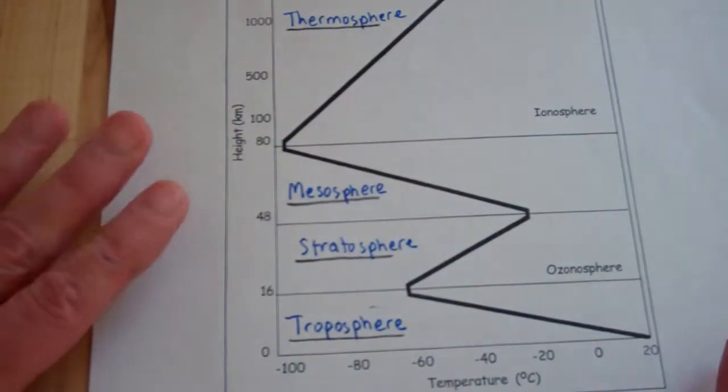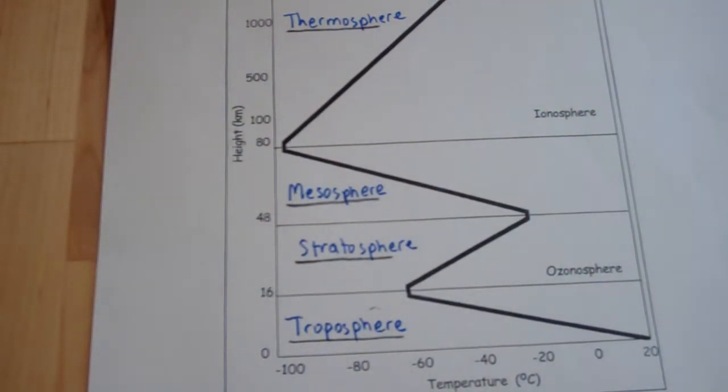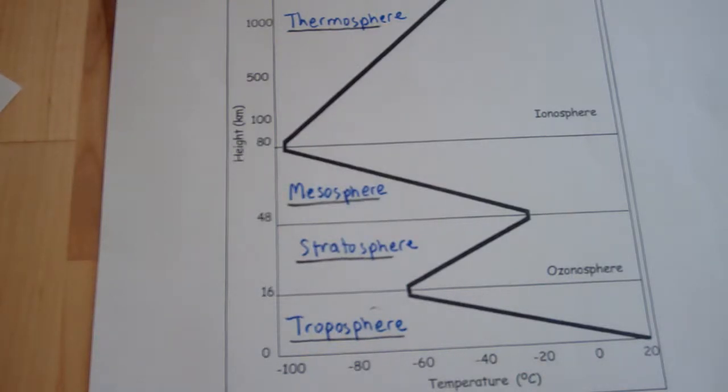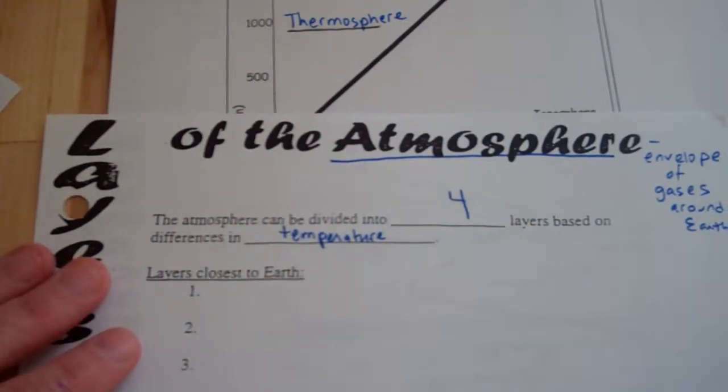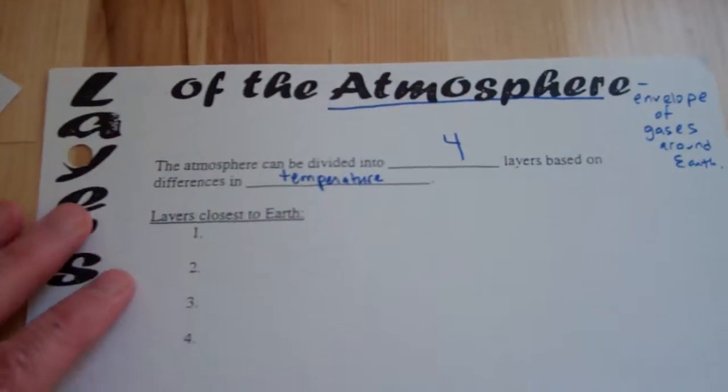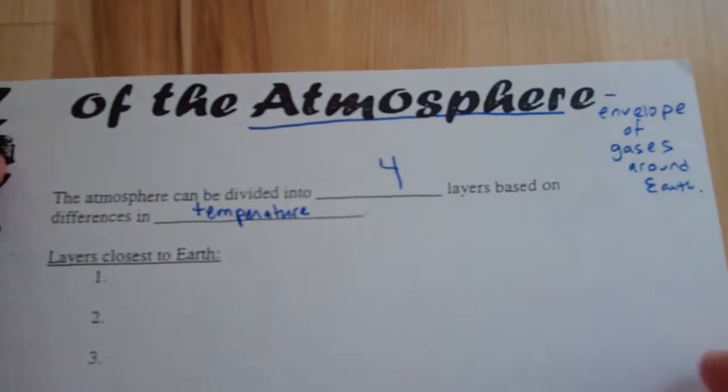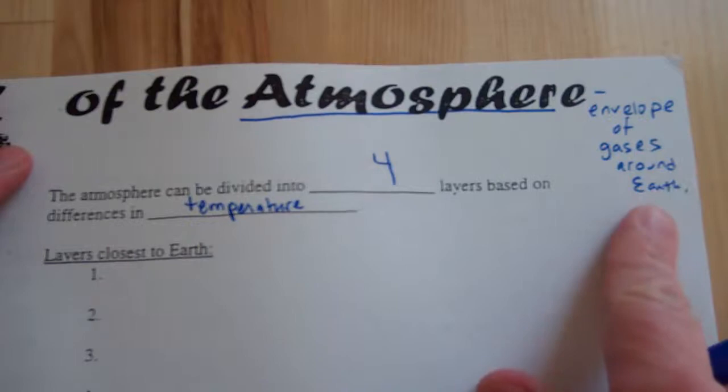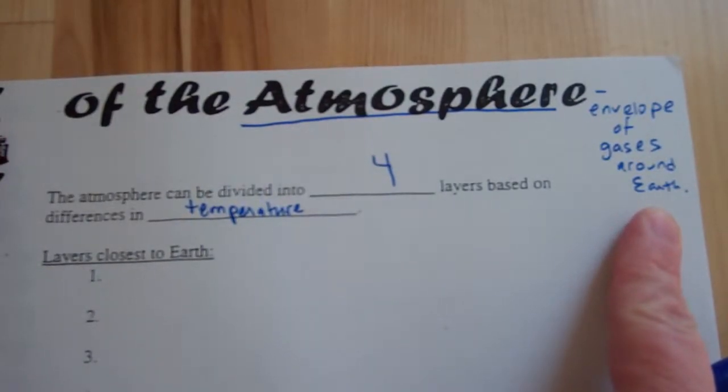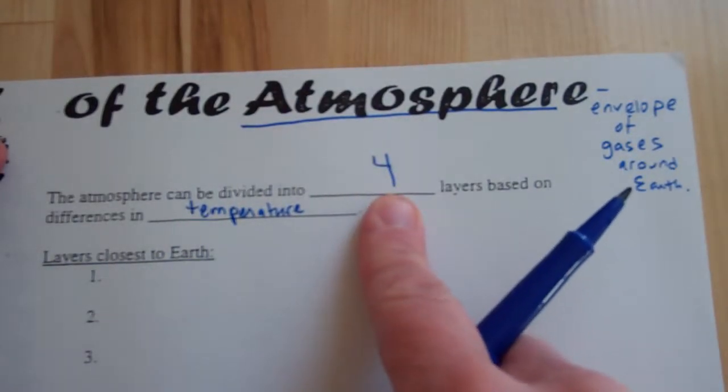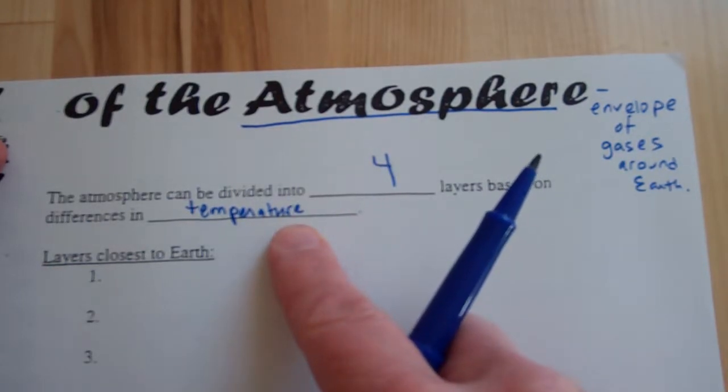So knowing this, let's look at our class note sheet. Your class note sheet looked like this and I started to fill it out a little bit. The atmosphere is defined as an envelope of gases around the earth. So it's a surrounding, a big surrounding envelope of gases around the earth.